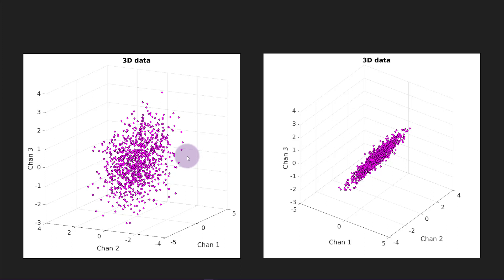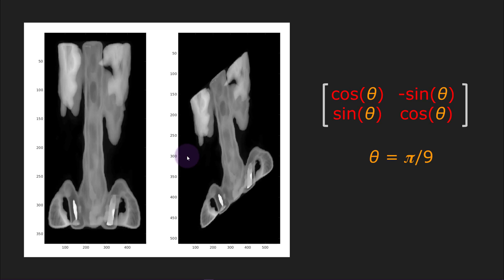The ease and the power of transformation matrices is also why linear algebra is important for computer graphics, graphical programming, and geometry. Matrices can be used to encode translations, rotations, and stretching or compressing factors.